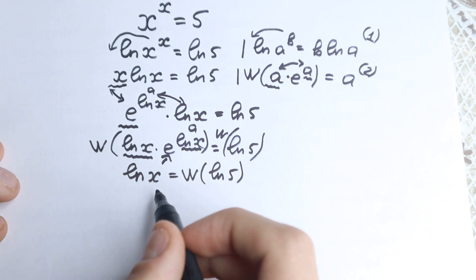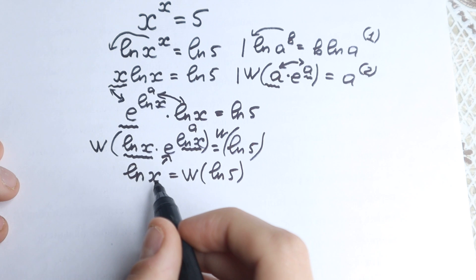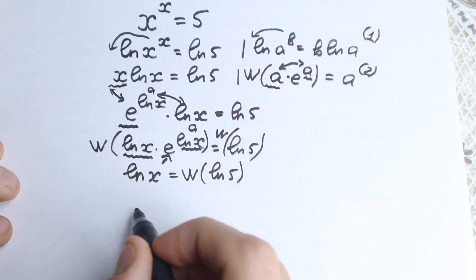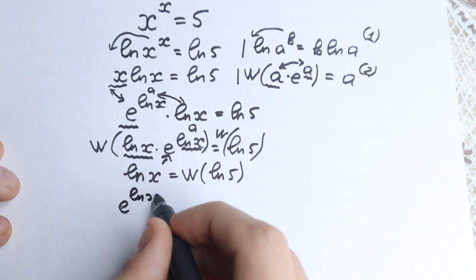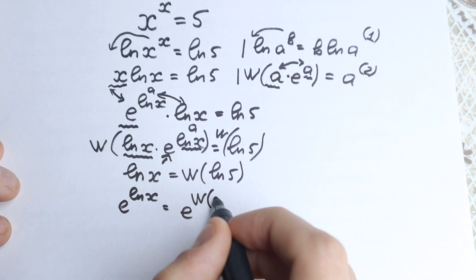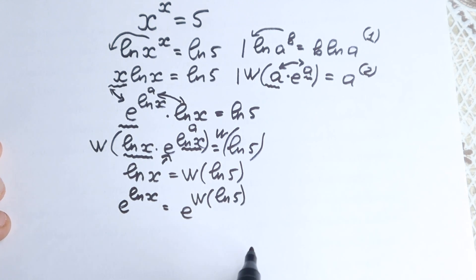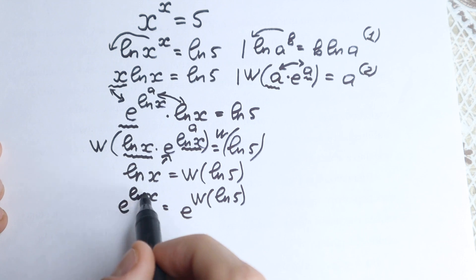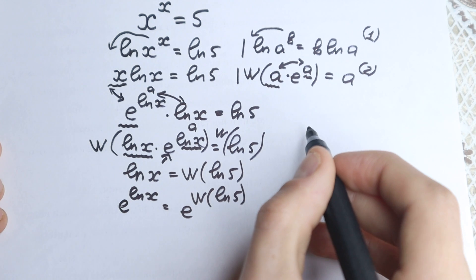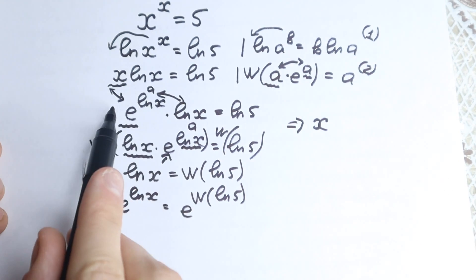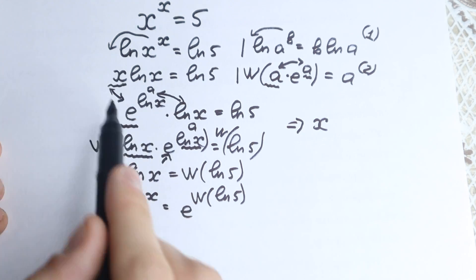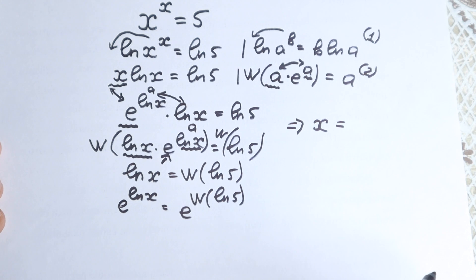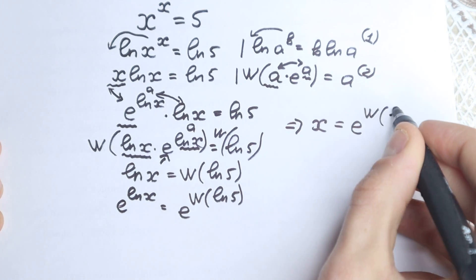On the left hand side we have natural log x, but we need x itself. Here's a really interesting trick: we create base e on both sides. So e to the power natural log x equals e to the power Lambert W of natural log 5. On the left hand side, e and natural log cancel, leaving only x. So x equals e to the power Lambert W of natural log 5.